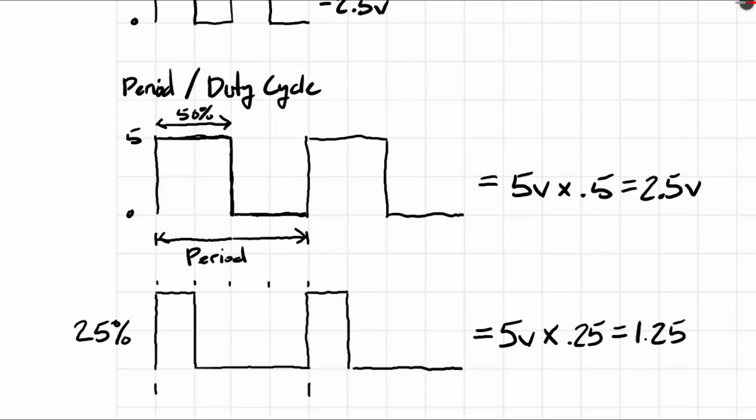So 5V for an LED would be its full brightness. 0V would obviously be off or not showing any light at all, and 2.5V would be between that.